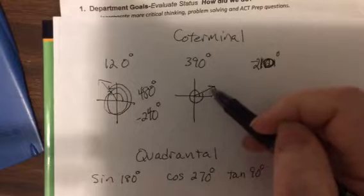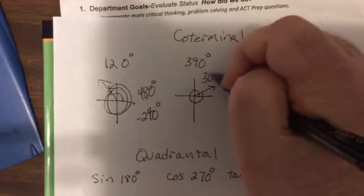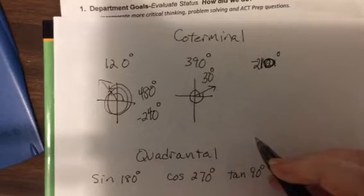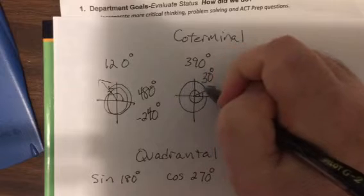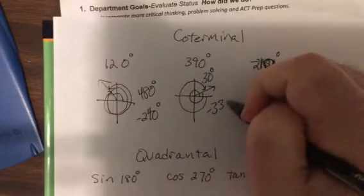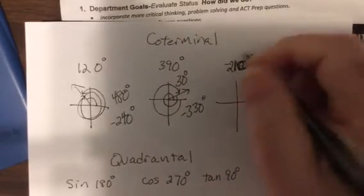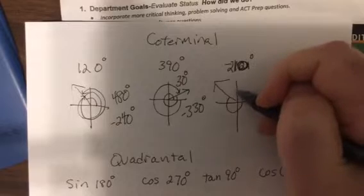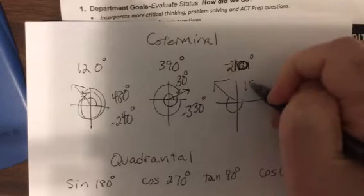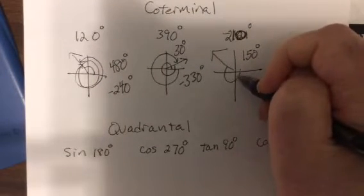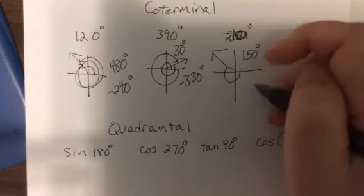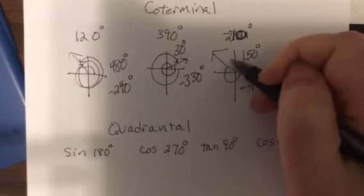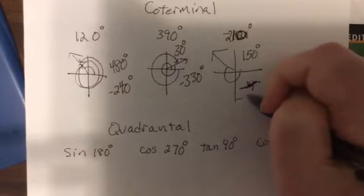390, so 390 here's 360 and 30 more. So a co-terminal, same terminal side, would be 30 degrees for the positive, or you could do a 390 and 360 more. And then negative, you're 30 short at 360, so it'd be negative 330, and then negative 210. Here's negative 180, a little bit more is 210, so that's negative 210. So this would be 150 going the other way. And another negative angle would be negative 360 and negative 210, so that'd be a negative, wait a minute, negative 210 negative 360 be negative 570.